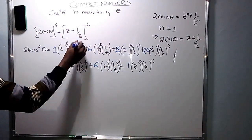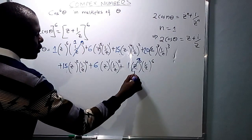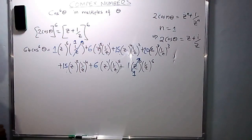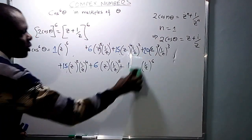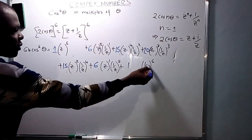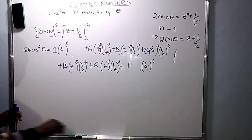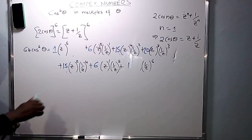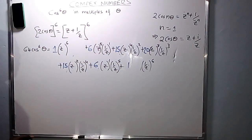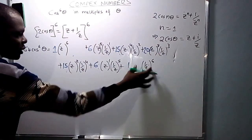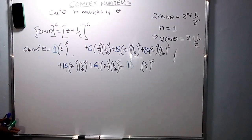Anything raised to power 0 is 1, so z raised to power 0 is 1, and 1 over z raised to power 0 is also 1. We remain with 1 over z raised to power 6 and z raised to power 6. The ones which have the same coefficient will have the same power, so we factor them together.